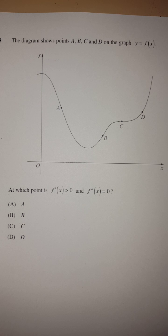Another question, this one was for the following year, and it's very similar in style. It's got, again, a picture of a function. It's got points A, B, C, and D labelled on that function. And the question's asking, at which point is the first derivative positive and the second derivative equal to zero?